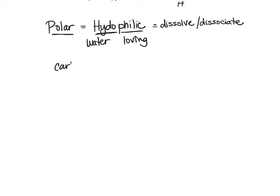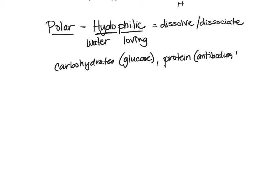Some examples of hydrophilic molecules are carbohydrates, specifically our glucose, which is our main energy source. Glucose is a polar molecule and therefore it's hydrophilic — we can put a scoop of sugar in a container of water and dissolve it. Our proteins are also hydrophilic — things like our antibodies, insulin, and albumin. Albumin is a major blood protein we'll discuss when we get to the blood.